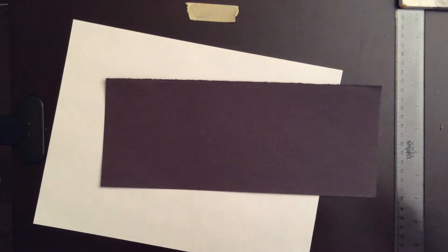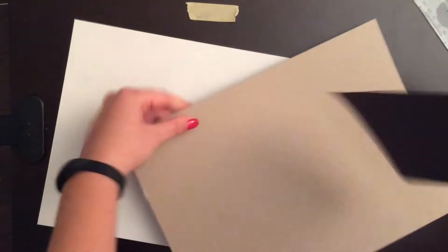Next thing you're going to do is take a clean piece of white paper and a half piece of black construction paper.